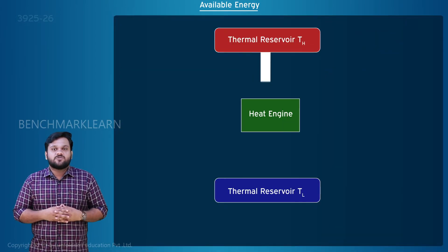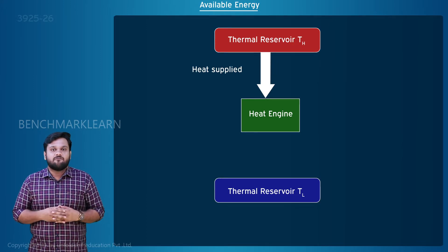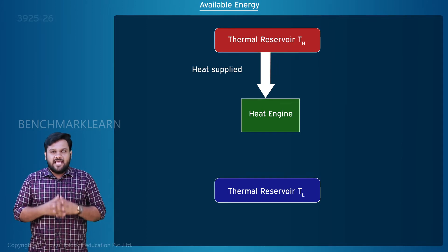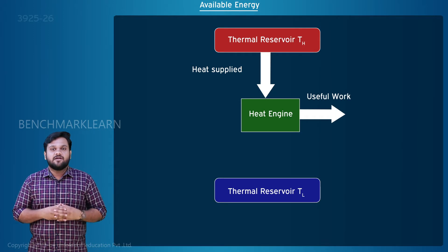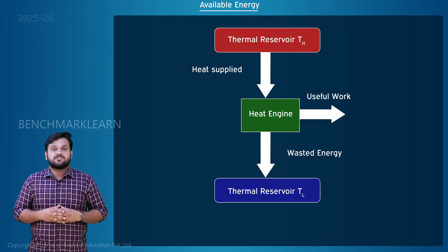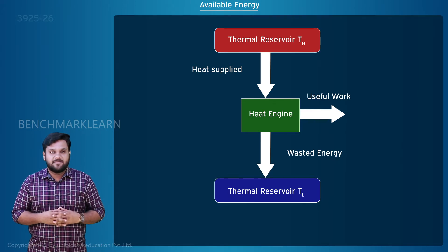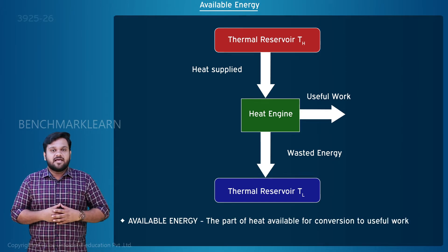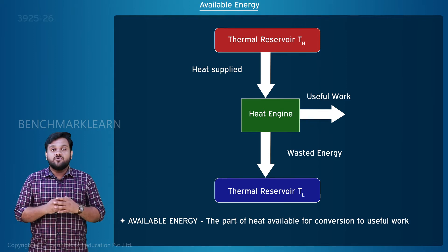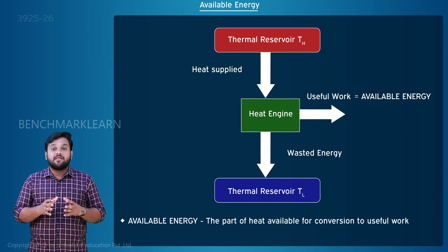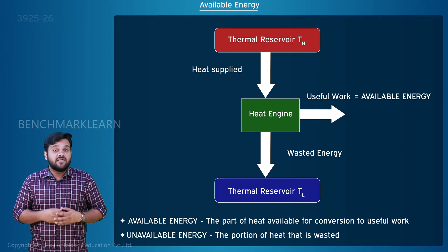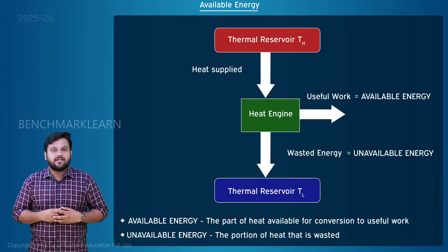For some quantity of heat absorbed from a thermal energy reservoir at high temperature, a certain part can be converted to work and the rest is to be rejected to a low temperature reservoir as waste heat. The part of heat available for conversion to useful work is called available energy. The portion of heat that is wasted is called unavailable energy.